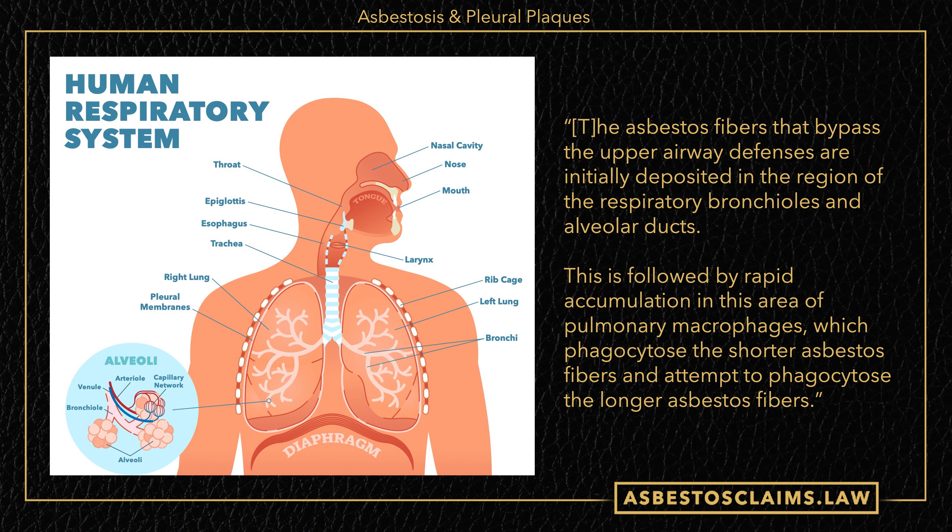These fibers go in, and if your upper airway defenses — like hair in your nose and other things that are designed to prevent you from breathing bad things — if those fail, the fibers are going to get jammed inside your alveoli and other areas in that region. That's followed by a rapid accumulation of pulmonary macrophages which try to phagocytose the shorter asbestos fibers and attempt to phagocytose the longer ones as well.